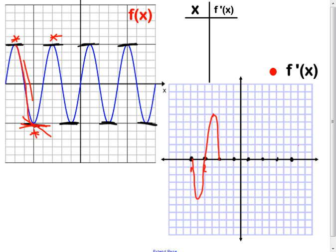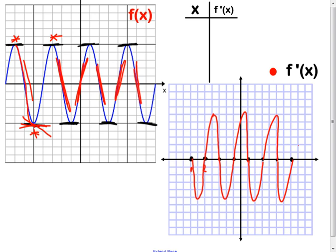Between the second and third 0, the slope is just the opposite — it's positive, and gets pretty steep, maybe up to 5 or 6. Between the next two 0's it's negative again. Then we turn to positive, go back down negative, back up positive, negative, and we end with positive on both sides.